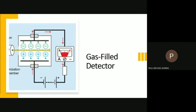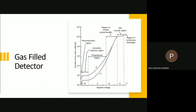Depending on the size or design of the gas field detector and the voltage applied between the two electrodes, the detector can operate in one of three regions: the ionization chamber region, the proportional region, and the GM counter region.